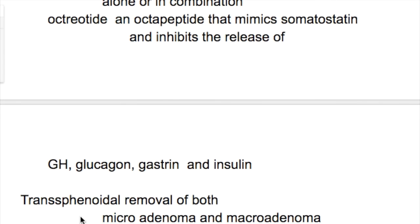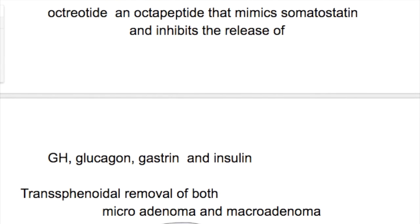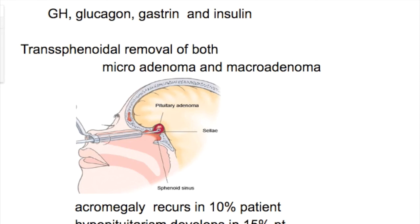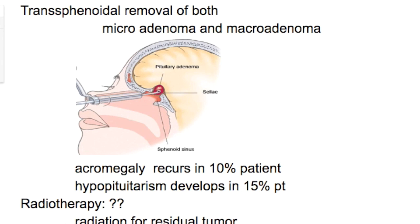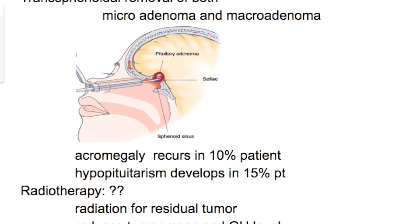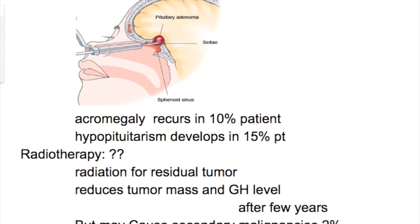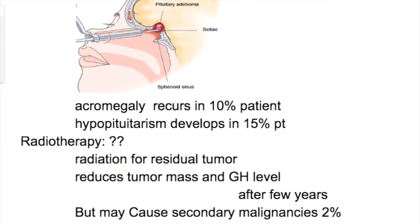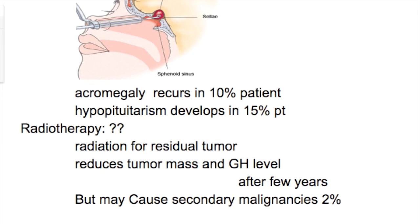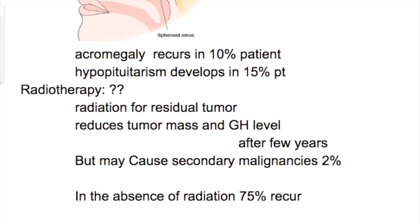The surgical treatment is trans-sphenoidal removal of both microadenoma and macroadenoma. Acromegaly recurs in 10 percent of patients, and hypopituitarism develops in 15 percent. Radiotherapy is done for residual tumour; it reduces tumour mass and growth hormone levels after a few years, but may cause secondary malignancies in 2 percent of cases. The advantage of radiotherapy is that without it, 75 percent of tumours recur. Due to hypothalamic damage, more than 50 percent of patients develop pituitary deficiency within 10 years and most require lifelong pituitary hormone replacement.